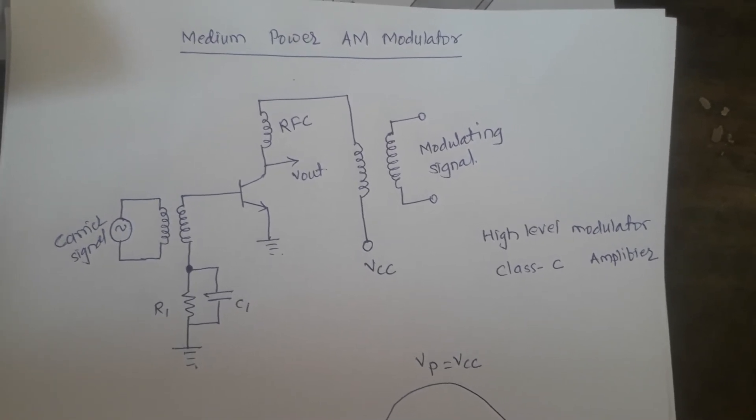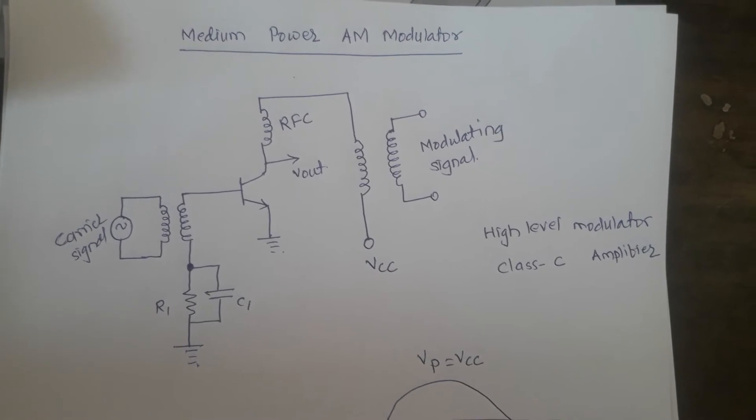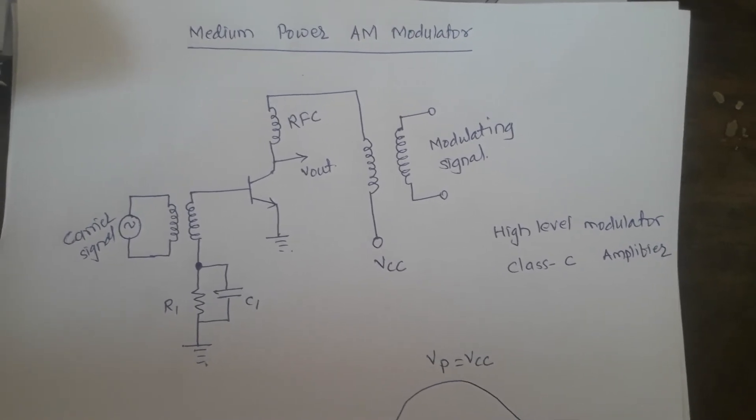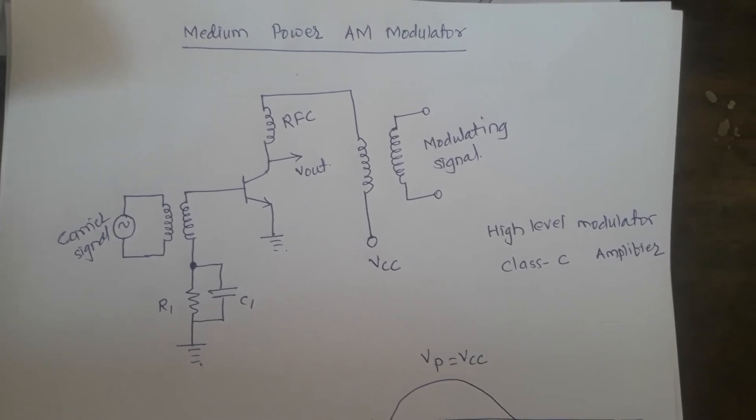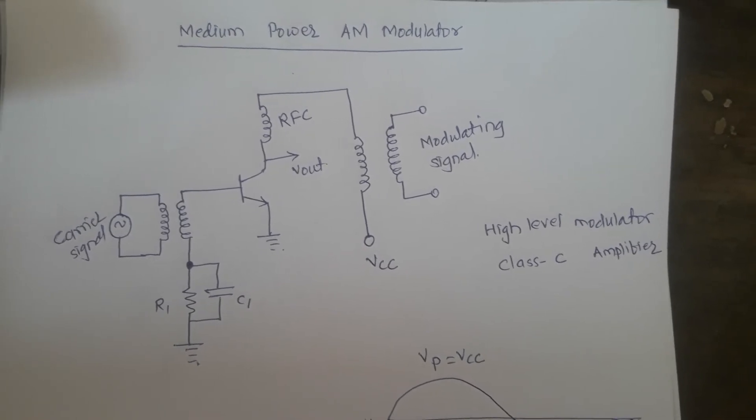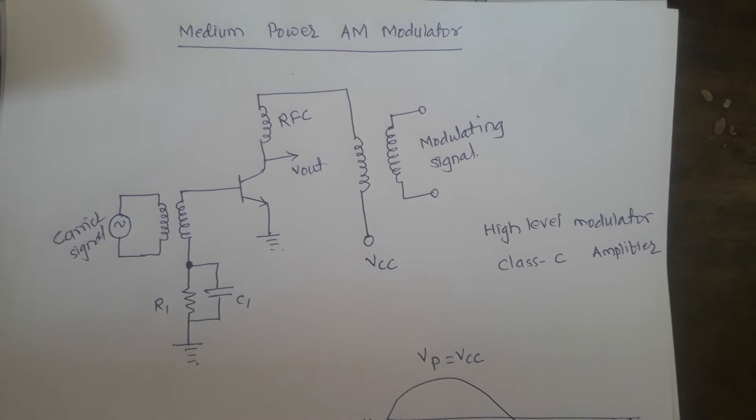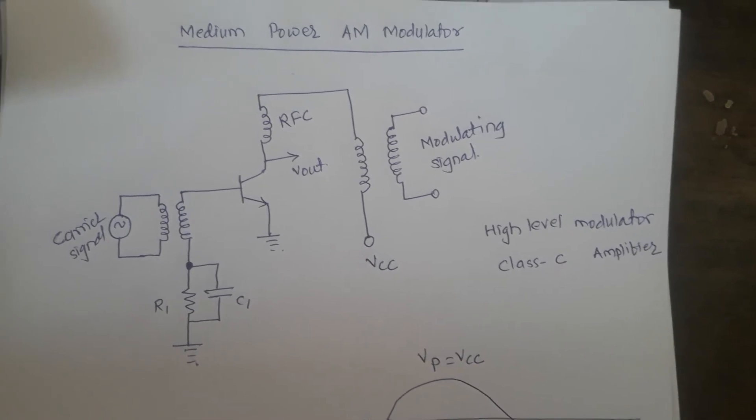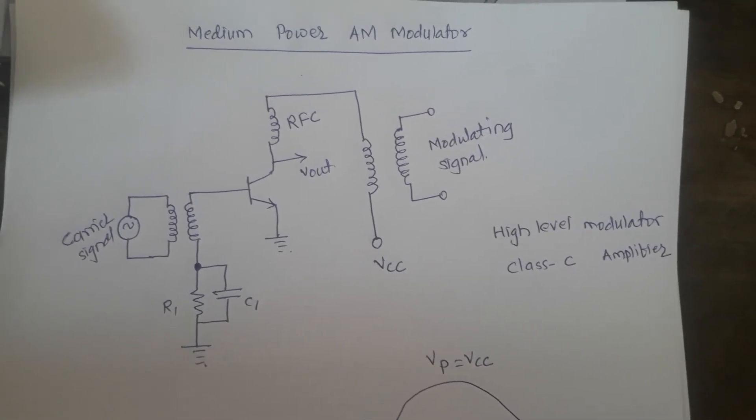All of you are here observing the carrier signal is applied to the base of the transistor and the modulating signal is applied in series with the DC voltage to the collector through the RFCs, that is called as the radio frequency choke.